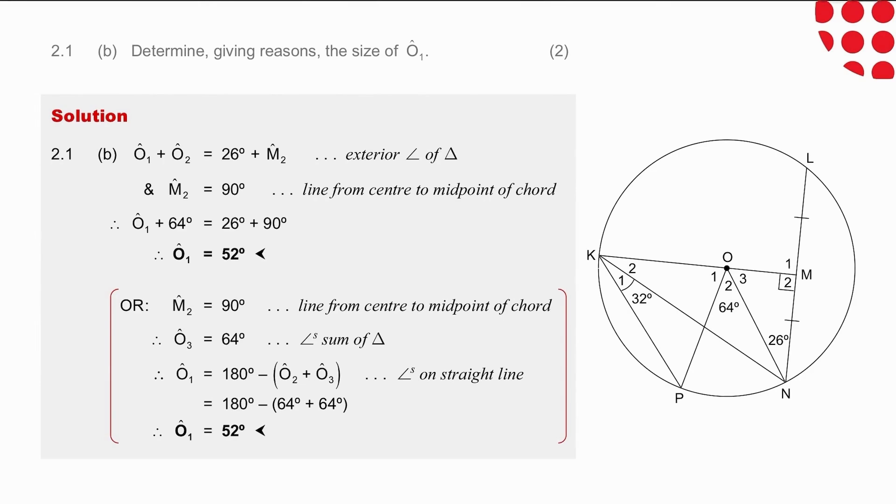If we look at the solution written up very nicely for you, we have angle O1 and angle O2 being combined to form the sum of 26 and M2, because we're using the exterior angle of the triangle. Angle M2 we can account for because we've got the line from the center to the midpoint of the chord, so we know it's 90 degrees. We also know that angle ONM is 26 degrees. So by using simple arithmetic, we can conclude that angle O1 is 52 degrees. If we use the second method, which doesn't use the exterior angle, it will require more steps, but it's a safe method. So we can start with angle M2 being 90, line from center to midpoint chord. We can explain that O3 is 64 because we have the angle sum of the triangle. Angle O1 is going to equal 52 degrees, because the angles on a straight line add up to 180 degrees.